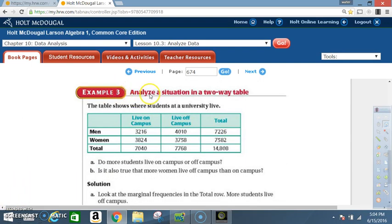Example 3. Analyze a situation in a two-way table. The table shows where students at a university live. So you got men women total live on campus live off campus and the total. A. Do more students live on campus or off campus? B. Is it also true that more women live off campus than on campus?